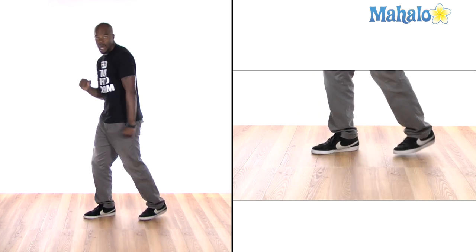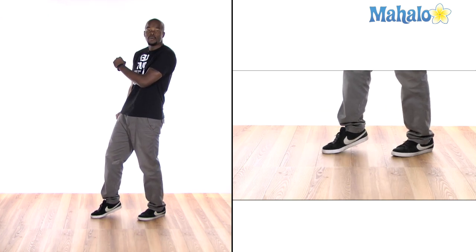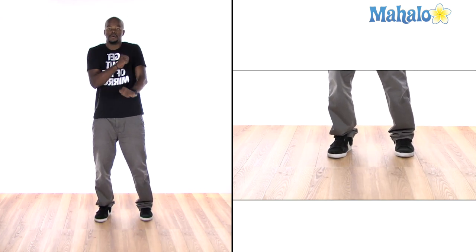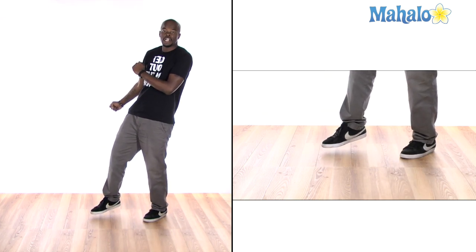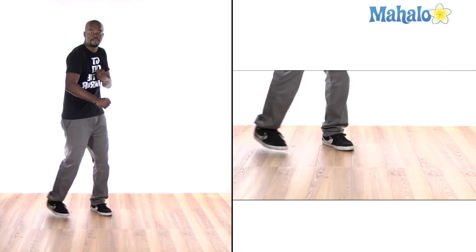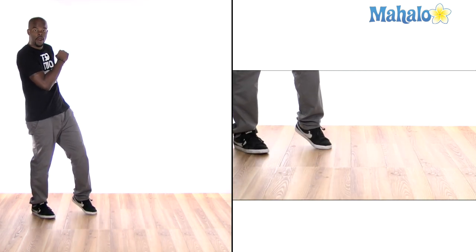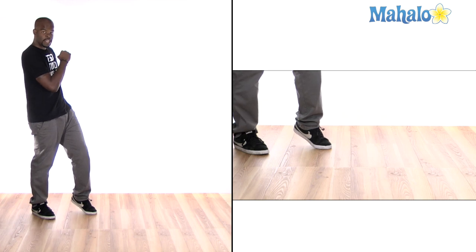So we have one, two. When we go around, you just do this motion with your arms. Boom, boom, boom. So you're going to go one, two. And with the arms, you're going to go right, left, right.